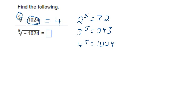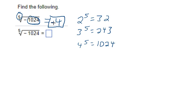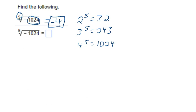Now, the negative sign — a lot of times students will overreact whenever there's a negative sign in the radical. It's something to be concerned about, but in this case, when the root is odd, it just ignores the negative sign — it just lets it pass right through. So the answer here is just negative 4. When it's an even root, like a square root or a fourth root, the negative sign causes some issues that we deal with later in the chapter.